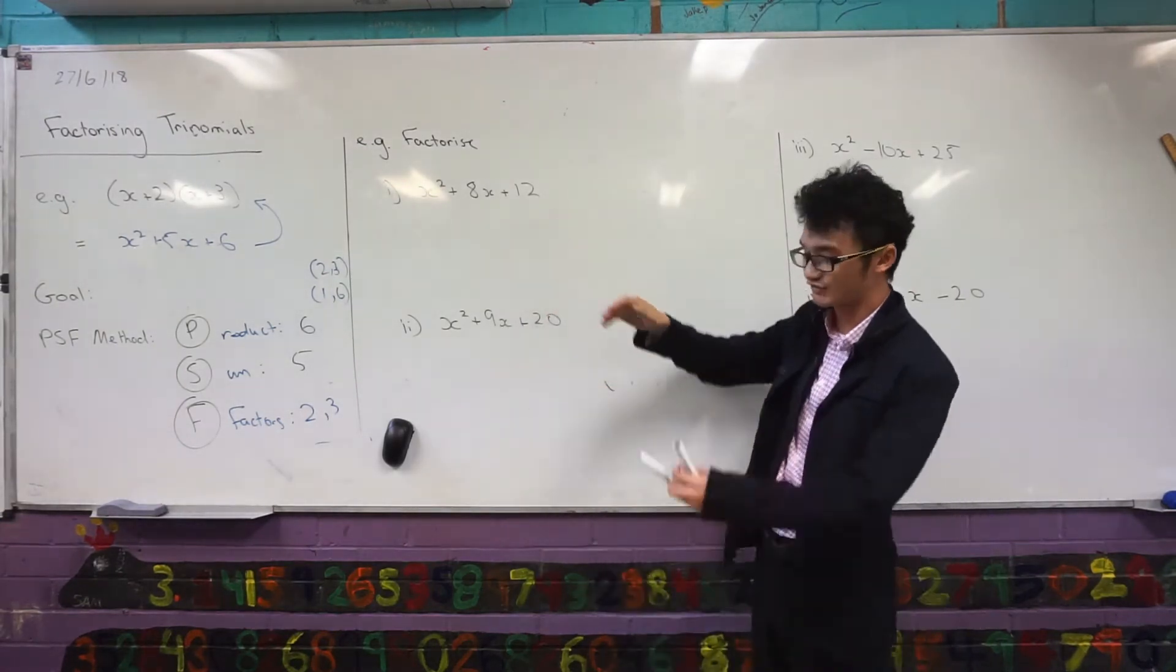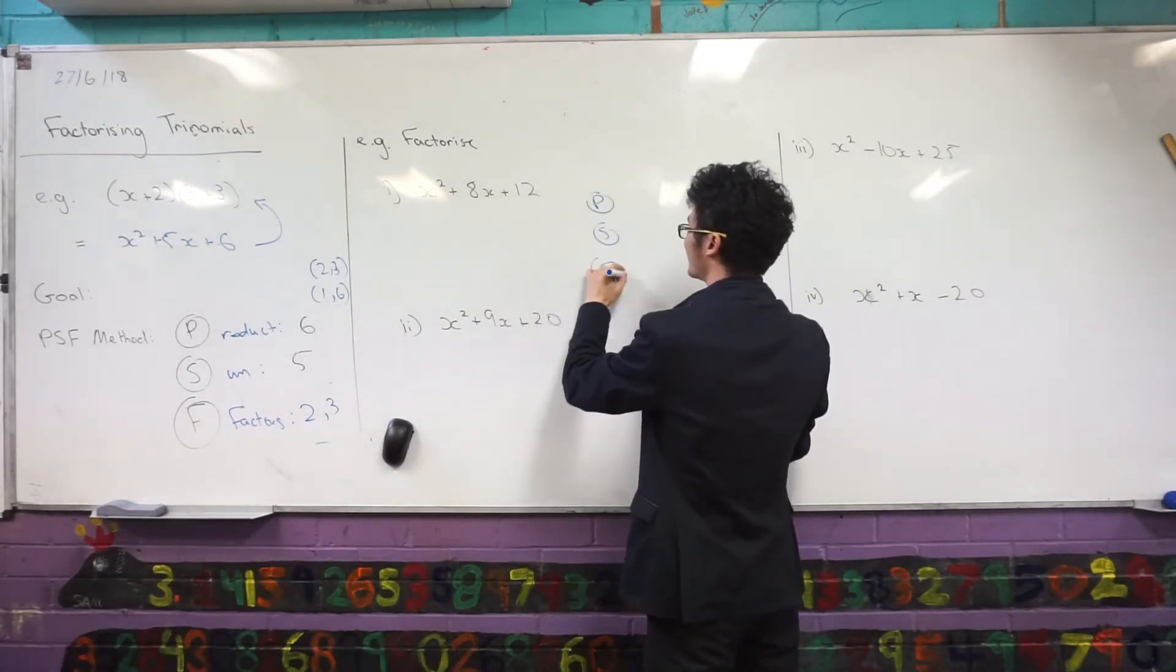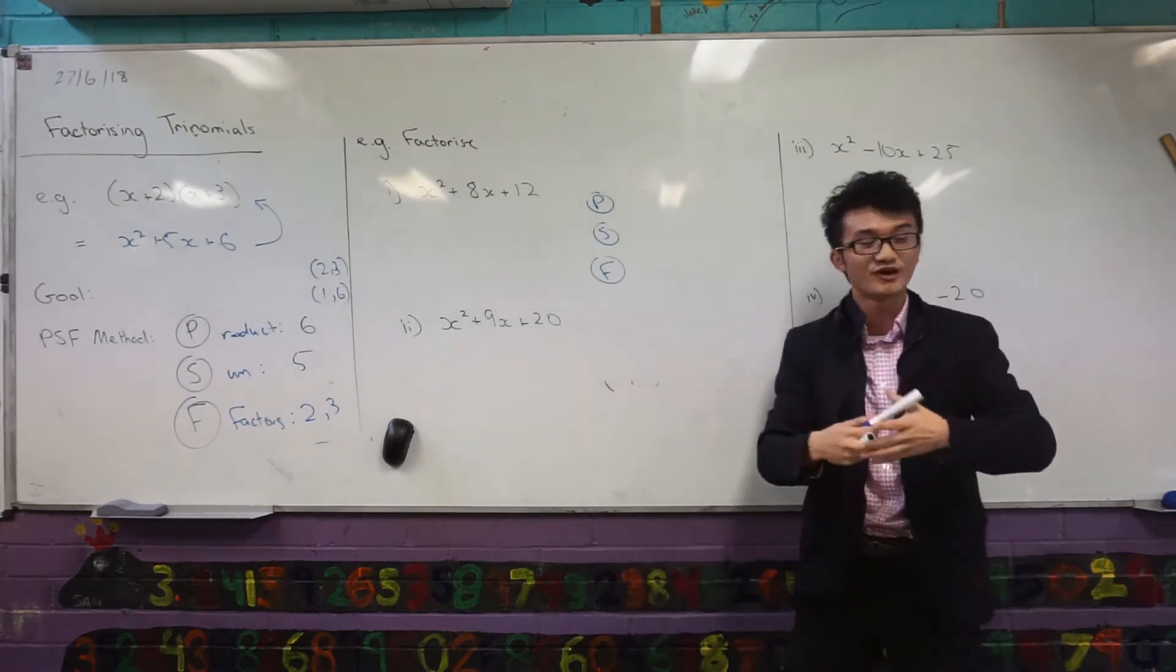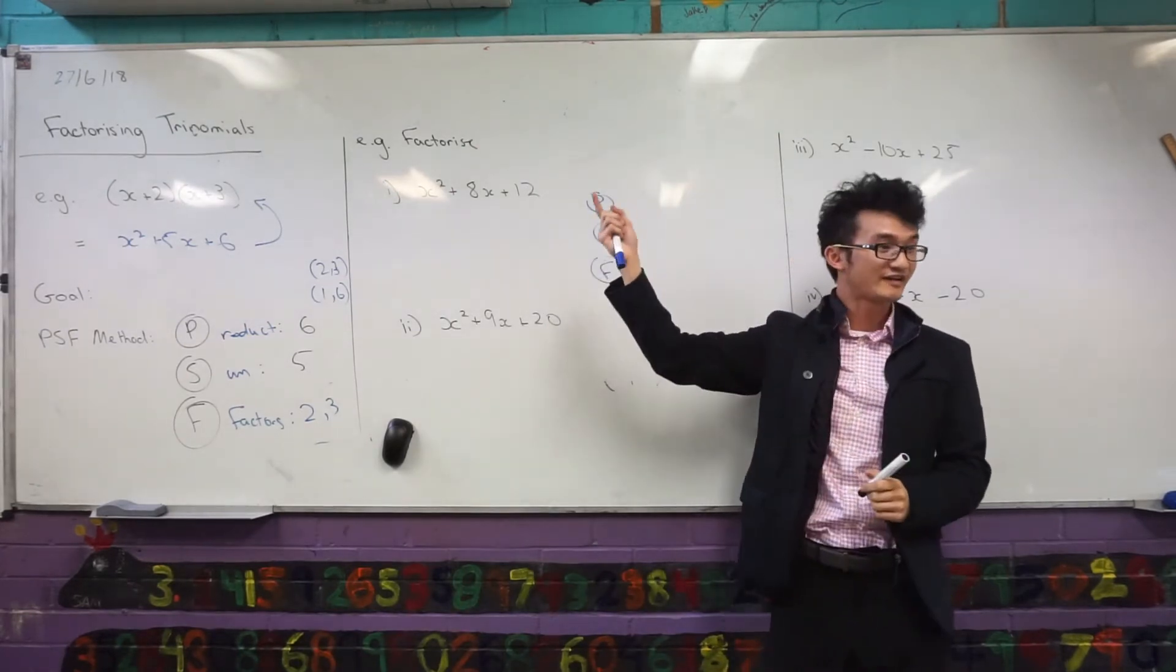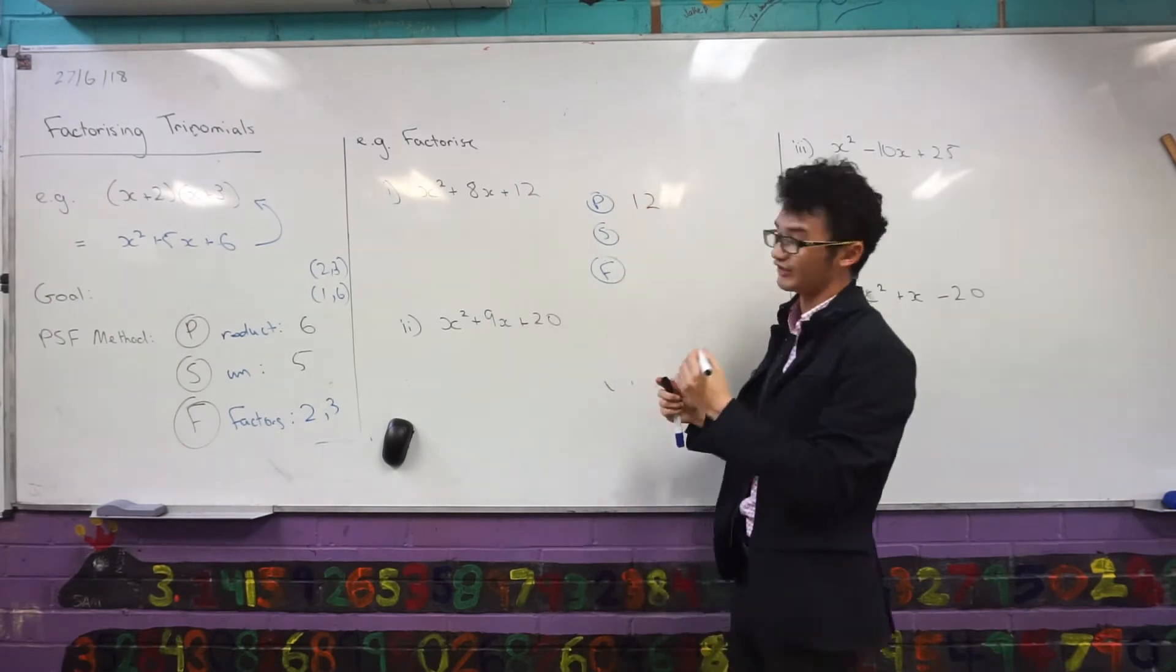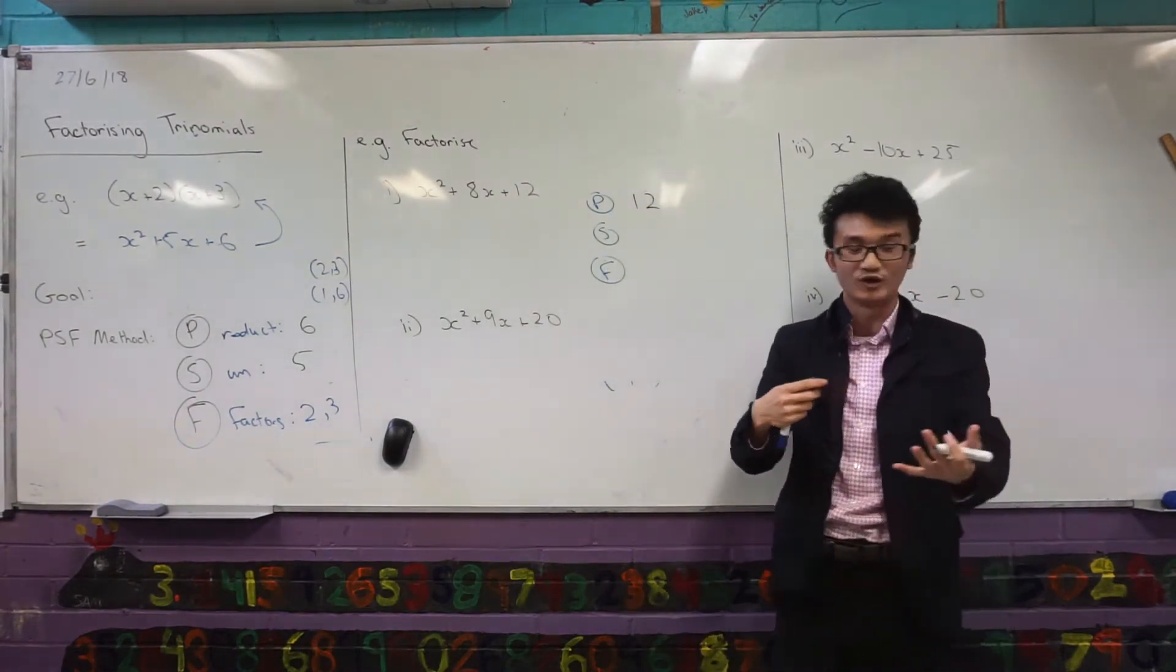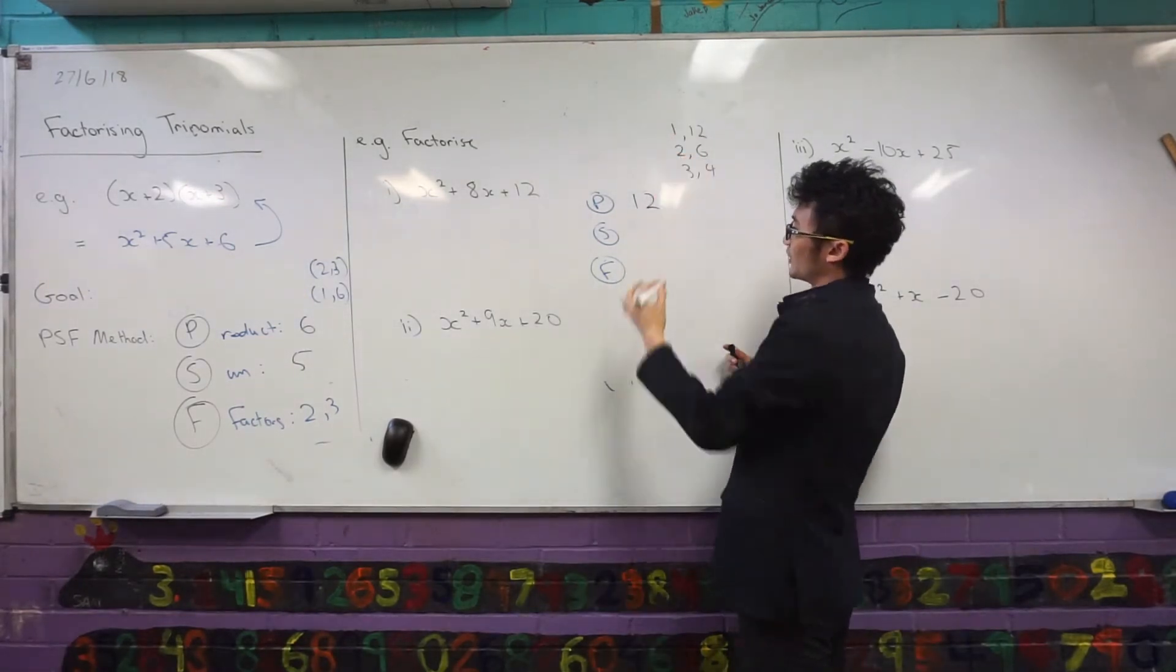So let's look at this first one. I'm taking PSF. My recommendation is, initially, you'll get faster with this over time, but initially, one thing that might be helpful is to just write all the factors of that number. So the product of 12 is what I'm looking for in that first case. And then I want to think all the numbers that multiply to 12. So I've got one and 12, two and six, three and four.